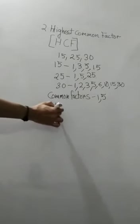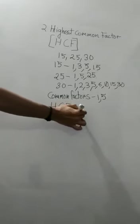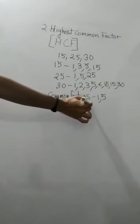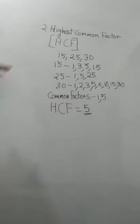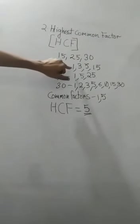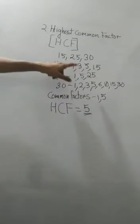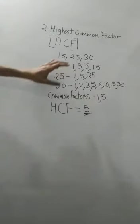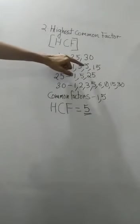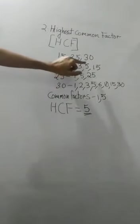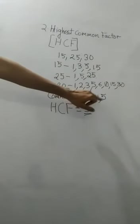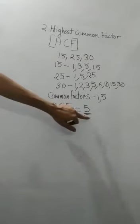So what will be the HCF? HCF means Highest Common Factor. The common factors are only 1 and 5. Which is the biggest among these two? It is 5. So the HCF is 5. This is how you find the HCF when given two or three numbers — write their factors, take the common factors, and the highest among the common factors is the HCF.